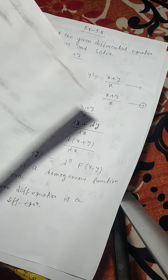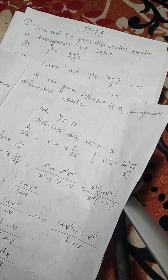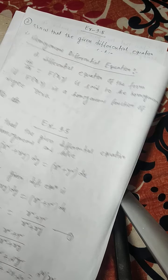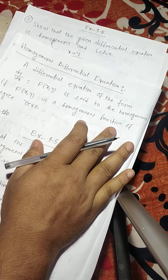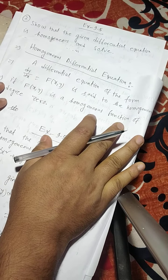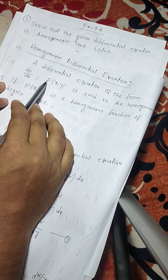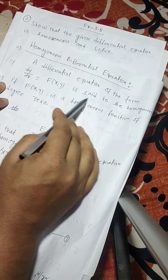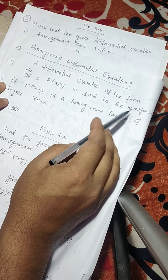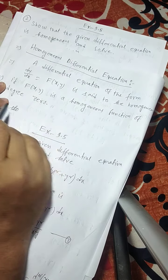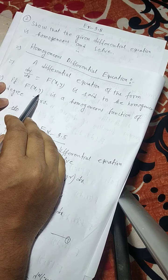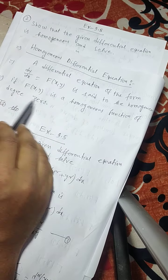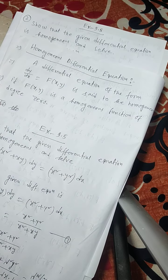Now, homogeneous differential equation. A differential equation of the form dy/dx equals to f of x, y is said to be homogeneous if f of x, y is a homogeneous function of degree 0.